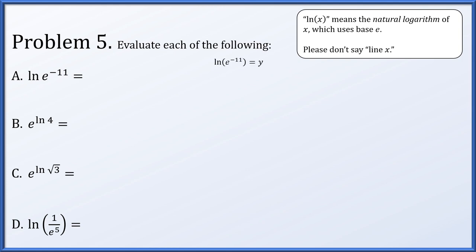For part a, we set the natural log of e to the minus 11 equal to y. This is a logarithm of base e, so we convert it to an exponential expression: e to the y equals e to the minus 11, so y equals minus 11. For part b, we set e to the natural log of 4 equal to y. Converting to a logarithm of base e, the log of y equals log of 4. Since logarithms are also one to one, y equals 4.